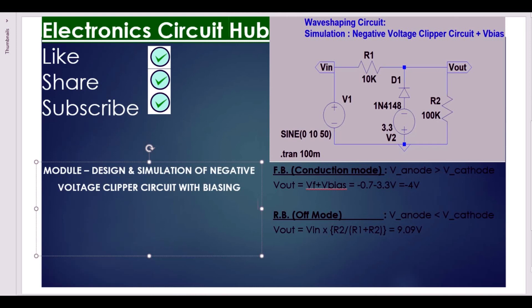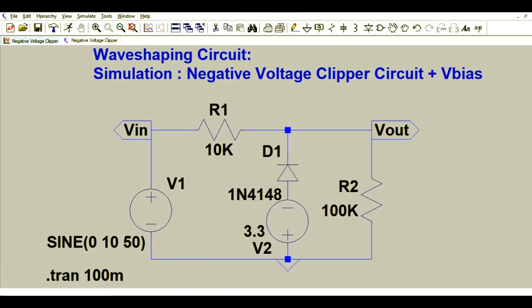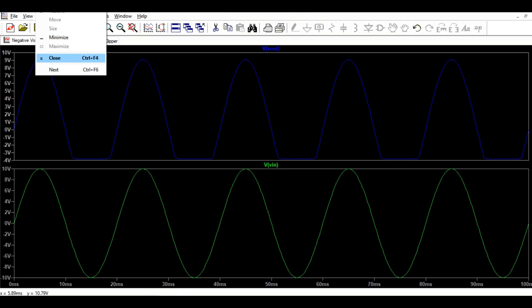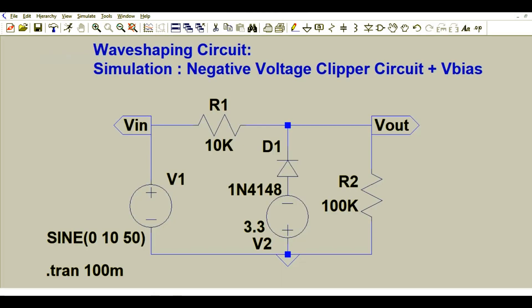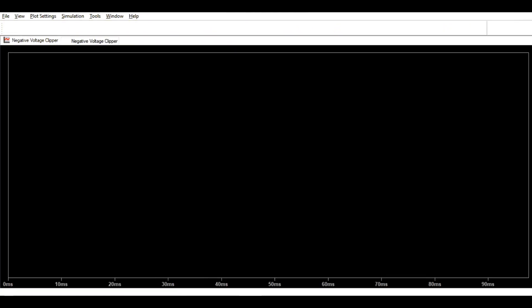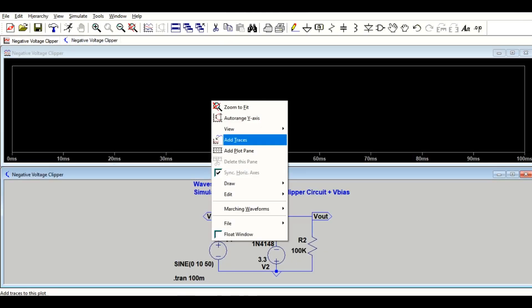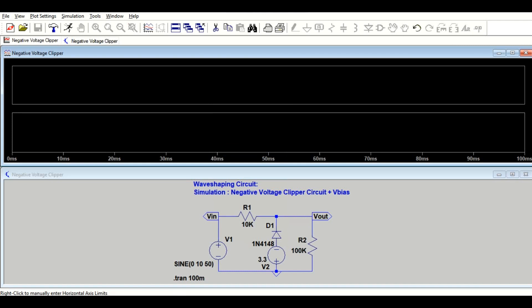Now let us see in LTE Spice. So this is the circuit I have drawn here, already drawn here. There is only difference between negative voltage clipper and negative voltage clipper with Vbias voltage - we have added this 3.3 volt here. So now let me run the simulation. At plot pane, this is input waveform and this is output waveform.